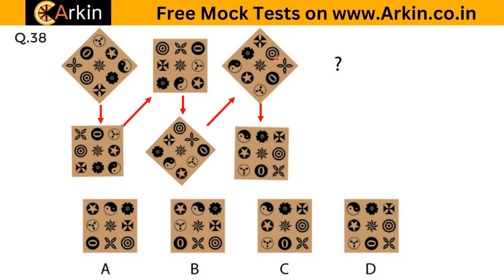For the question mark, the whole arrangement shifts one step forward again. Comparing options C and D — they are almost the same as the previous step, but one more shift is involved, so C and D will be wrong. Now looking at A and B: after the shift, the orientation of the element at the corner should remain vertical — it just shifts direction without changing orientation. So A will be wrong and B will be the correct answer.